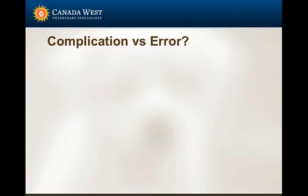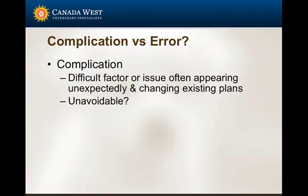One of the things I think is really important to stress is there's a big difference between a complication and an error. I don't want errors ever to happen during anesthesia. Complications I don't mind — complications make it interesting. A complication is defined as a difficult factor or issue appearing unexpectedly and changing your existing plans. Sort of unavoidable — things happen. The patient becomes hypotensive, the patient becomes bradycardic. That happens.